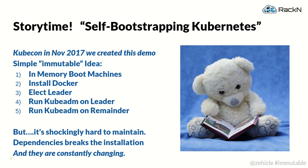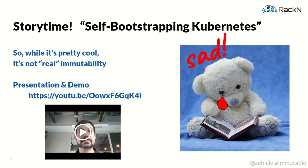But it's been hard to maintain that system because any change in Docker, in Kubernetes, or in kubeadm breaks it. It's not the process that fails — that's easy and very reliable. It's the dependencies that are changing. And that's just the reality of life. They are constantly changing. So we really wanted to ask: how do we take this very cool demo and make it more robust?